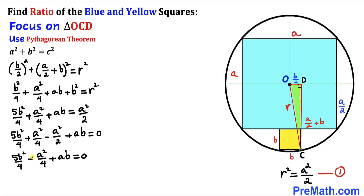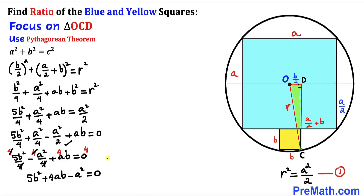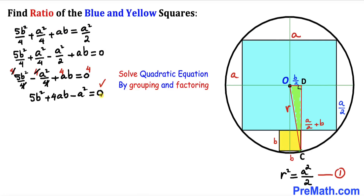To remove fractions, multiply every term by 4. This gives 5b² + 4ab − a² = 0. We now have a quadratic equation that we'll solve by grouping and factoring.